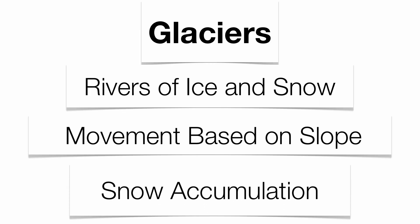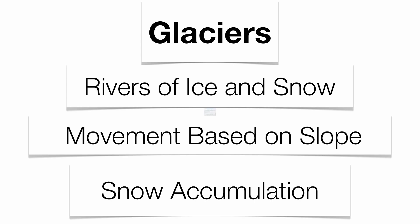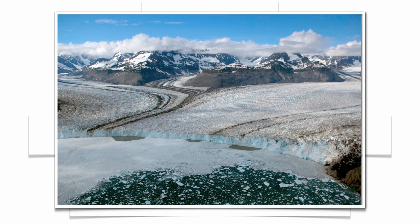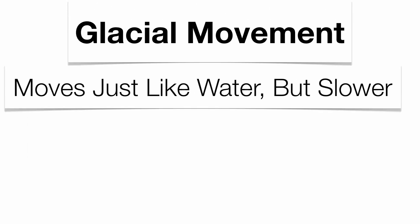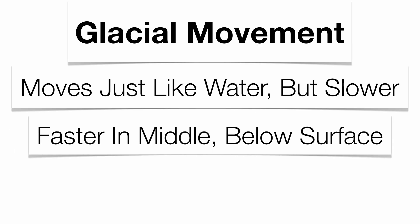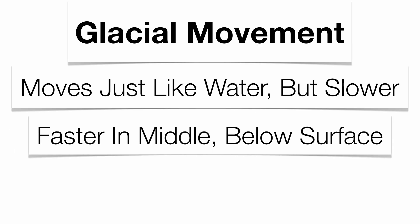It all comes down to how much snow is going to accumulate in the upper elevations. Here you can see the Columbia Ice Field as it enters a larger body of water. Now the glacial movement is very similar to water, except a little bit slower. Water moves faster in the middle, just below the surface — the same thing with glacial ice.